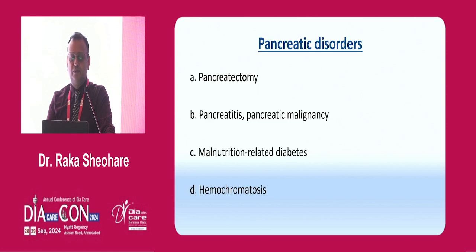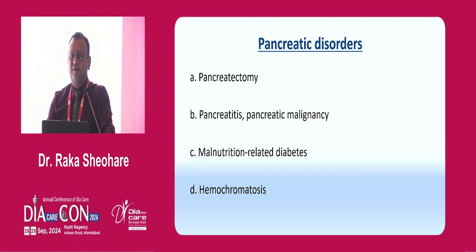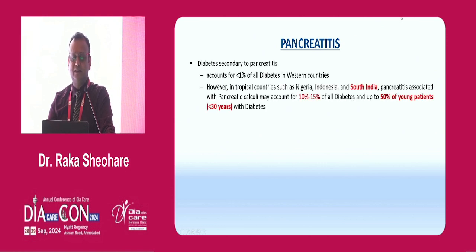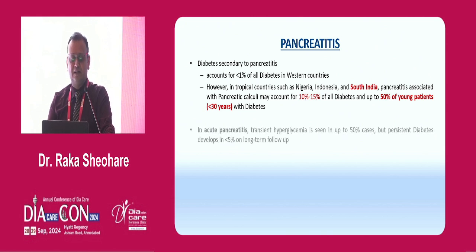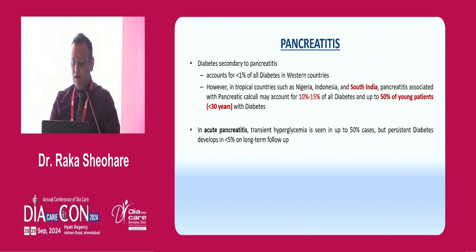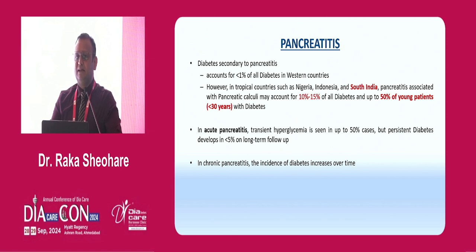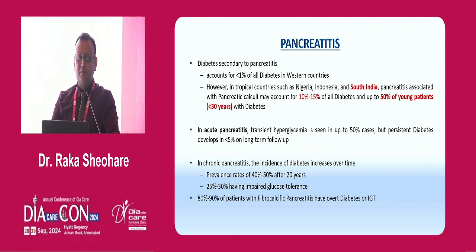Genetic diseases associated — start with pancreatic disorders. Pancreatic disorders which we see in our clinics: either the patient has pancreatectomy, pancreatitis, malnutrition-related diabetes, or hemochromatosis — the last RSSGI case in the case series is called bronze diabetes. In Western countries pancreatitis accounts for less than one percent, but in South India we are seeing many patients. Fifty percent of young patients under 30 years have such kind of diabetes.